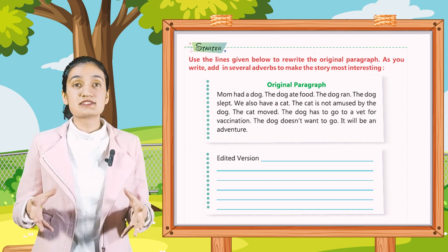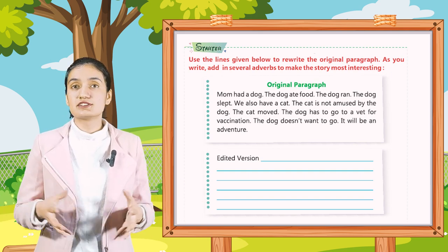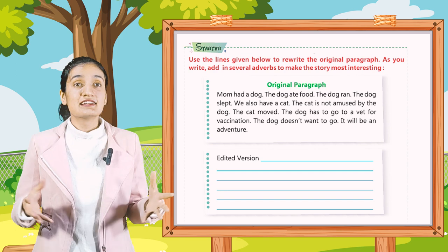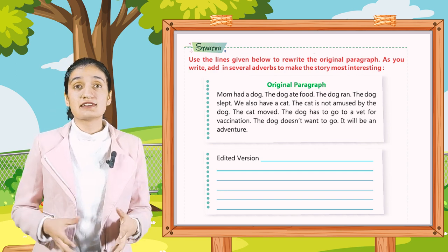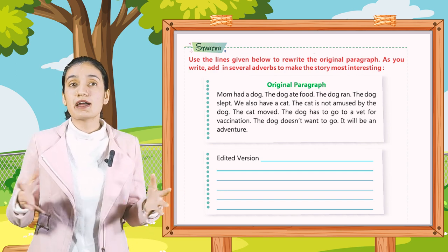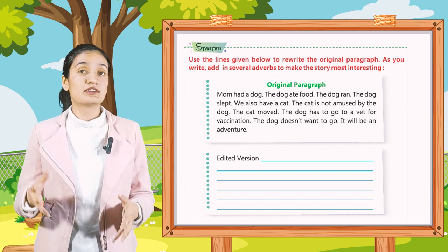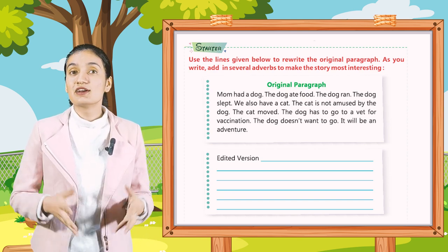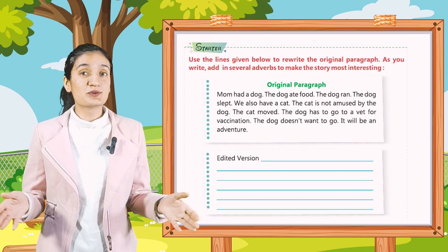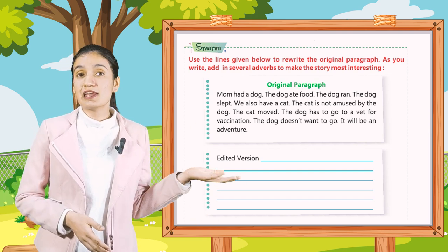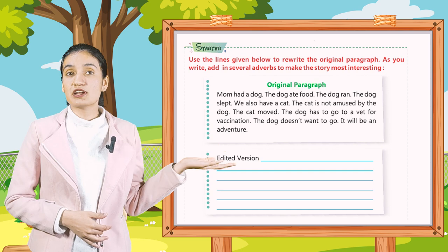Original paragraph: Mom had a dog. The dog ate food. The dog ran. The dog slept. We also have a cat. The cat is not amused by the dog. The cat moved. The dog has to go to a vet for vaccination. The dog does not want to go. It will be an adventure. Kids, you have to write down the edited version of this original paragraph.